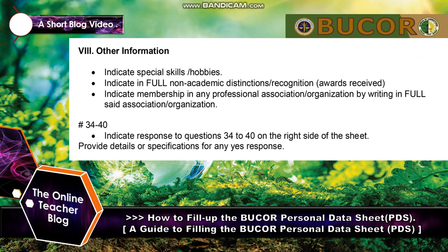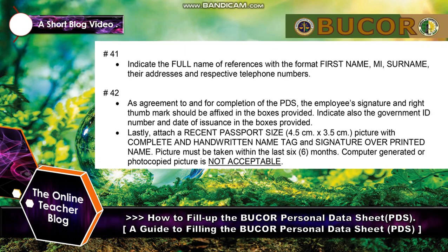Section 8 — Other Information: indicate special skills or hobbies. Indicate in full any non-academic distinctions, recognition, or awards received. Indicate membership in any professional association or organization by writing the full name of said association or organization. For questions 34 to 40 on the right side of the sheet, indicate your response and provide details or specifications for any 'Yes' response.